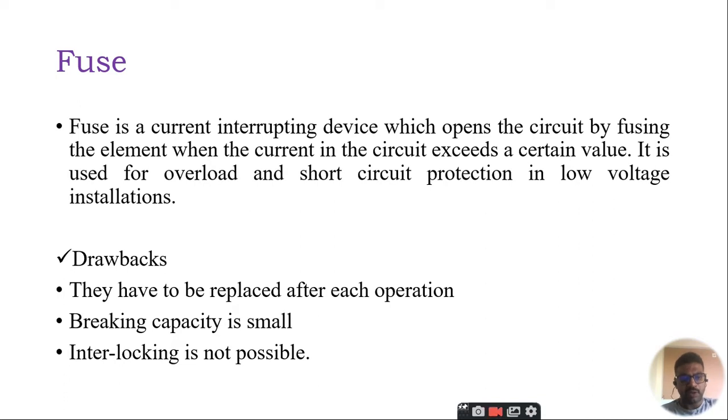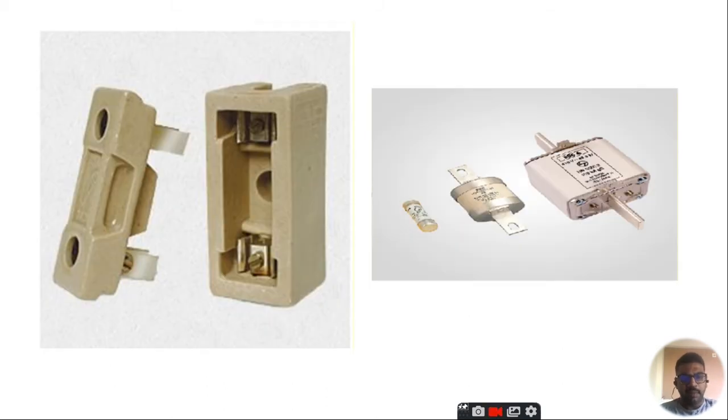This fault current should be interrupted as fast as possible. This is what an electrical fuse does. A fuse is a part of circuit which consists of the conductor which melts easily and breaks the connection when the current exceeds the predetermined value. An electrical fuse is the weakest part of an electrical circuit.